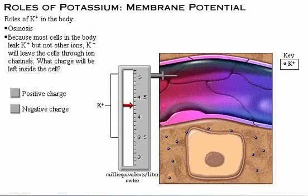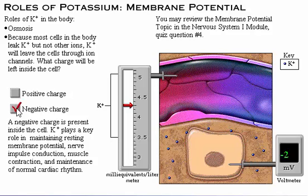Because most cells in the body leak potassium but not other ions, potassium will leave the cells through ion channels, and a significant amount of positive charge leaves the cell, leaving a negative charge inside. Potassium plays a key role in maintaining resting membrane potential and therefore a major role in nerve impulse conduction, muscle contraction, and maintenance of normal cardiac rhythm.